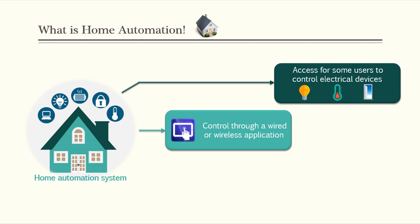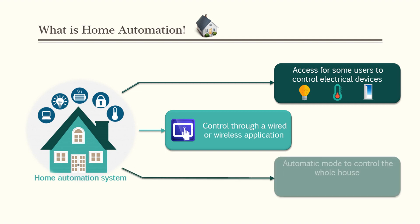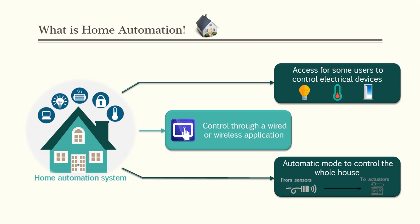About the automation part, the system is able to adjust some environmental parameters automatically using actuators and sensors. For example, the system can read temperature data from a temperature sensor and decide to turn on or switch off an air conditioner.